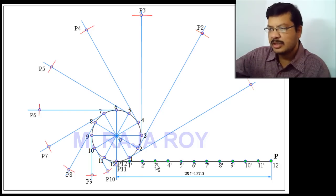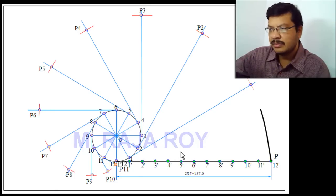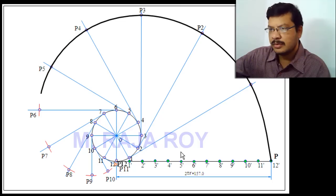Now draw a smooth curve joining P, P1, P2, P3, and so on up to P12. This smooth curve is the involute.